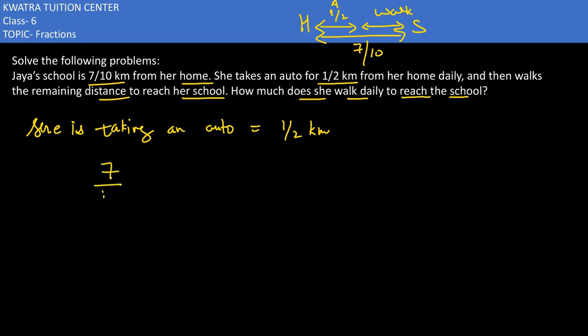You would be taking 7 by 10 minus half km. Why are we subtracting it? Because she has to cover it from auto and the rest of it she would be walking.